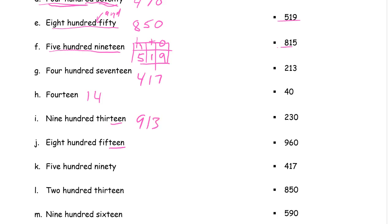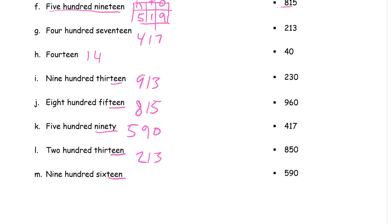913 should look like that. 815 should be an eight for the hundreds and a 15. 590. This is not a teen anymore, so we need 90. That's a five for the hundreds, and nine, 90 is nine tens. We have zero ones because it's not 90 anything else. Now we're back to the teens again. So 213, that's a 13 with 200. And then finally 916, that's a 16 with nine hundreds.